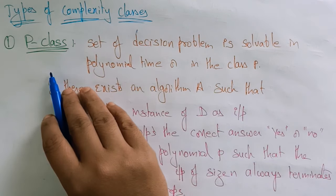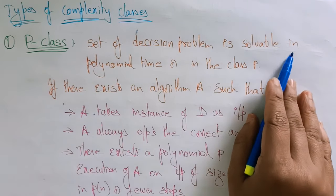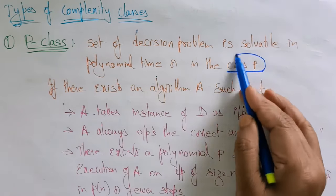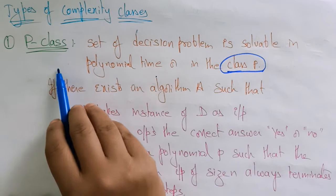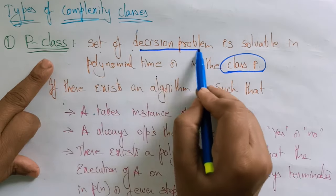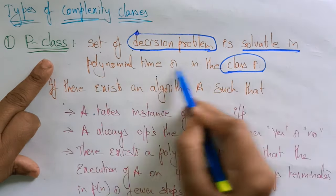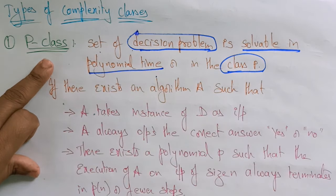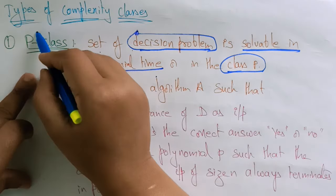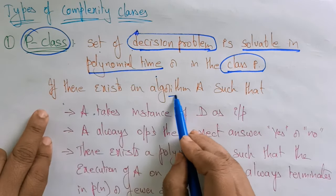The first one is the P class. What is this P class? The set of decision problems that are solvable in polynomial time belongs to the class P. That is the P class definition — the set of decision problems that are solvable in a polynomial time. In a particular polynomial time, I am solving the set of decision problems that represent the P class.